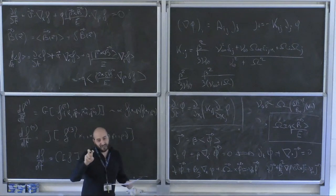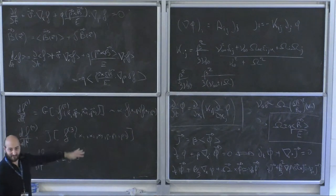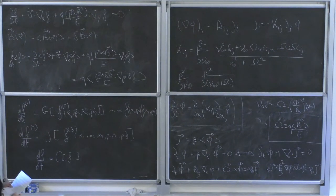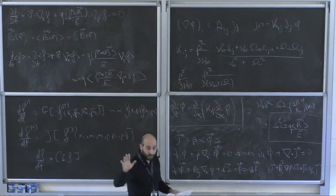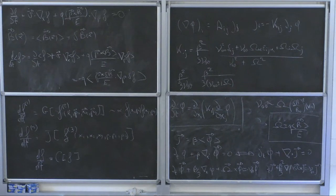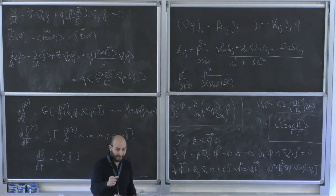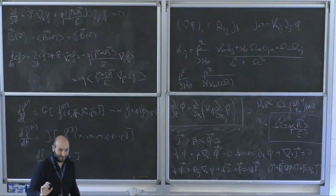There is an alternative, more formal and systematic way to obtain the same result, known as quasi-linear theory. It consists of taking the equation for the complete f, taking the equation for the ensemble average of f, and subtracting the two. This makes δf emerge as the expansion parameter, and we can see explicitly where the approximation comes from.